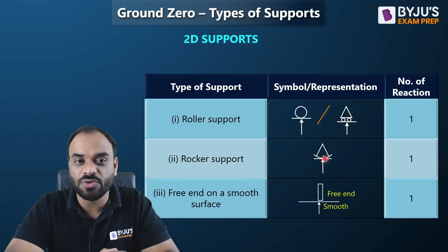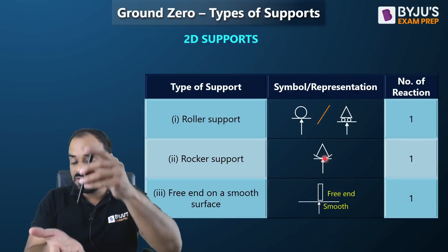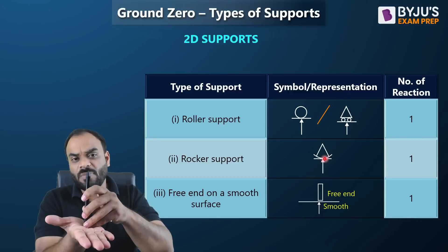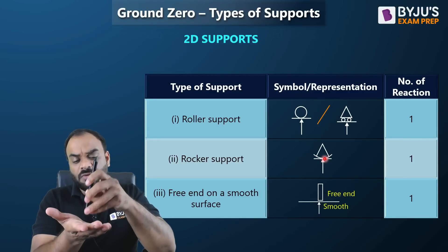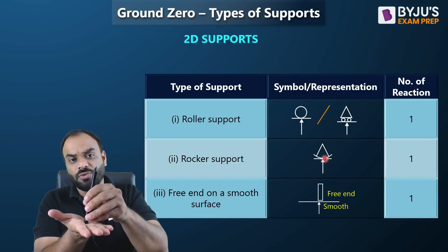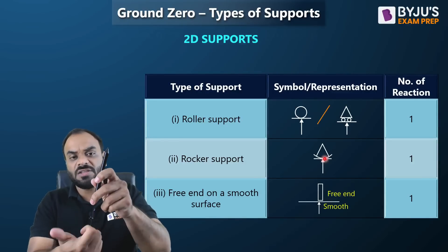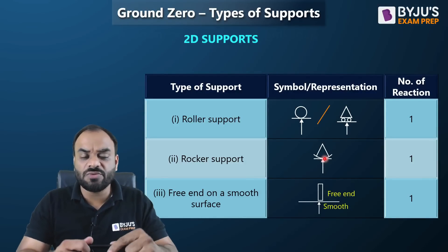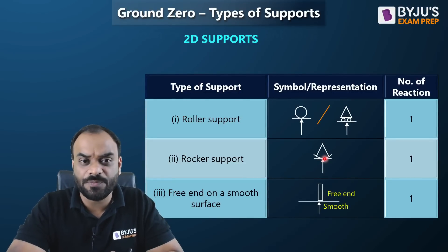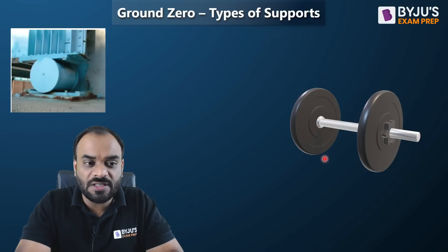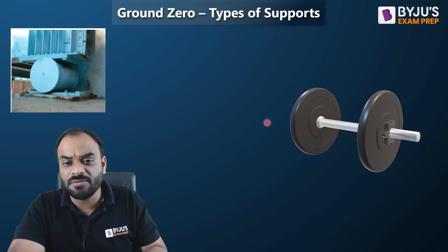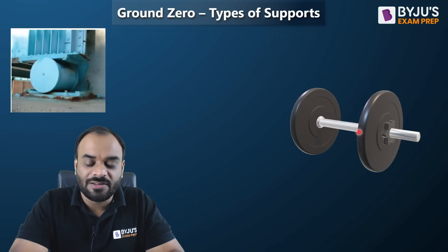The next support type is the free end on a smooth surface. For example, if a pen is placed on a smooth surface, one reaction develops in the upward direction because the floor provides a reaction against the contact. So if you have a free end on a smooth surface, only one reaction can be present. In summary, roller, rocker, and free end on a smooth surface all have only one reaction, but under different conditions.